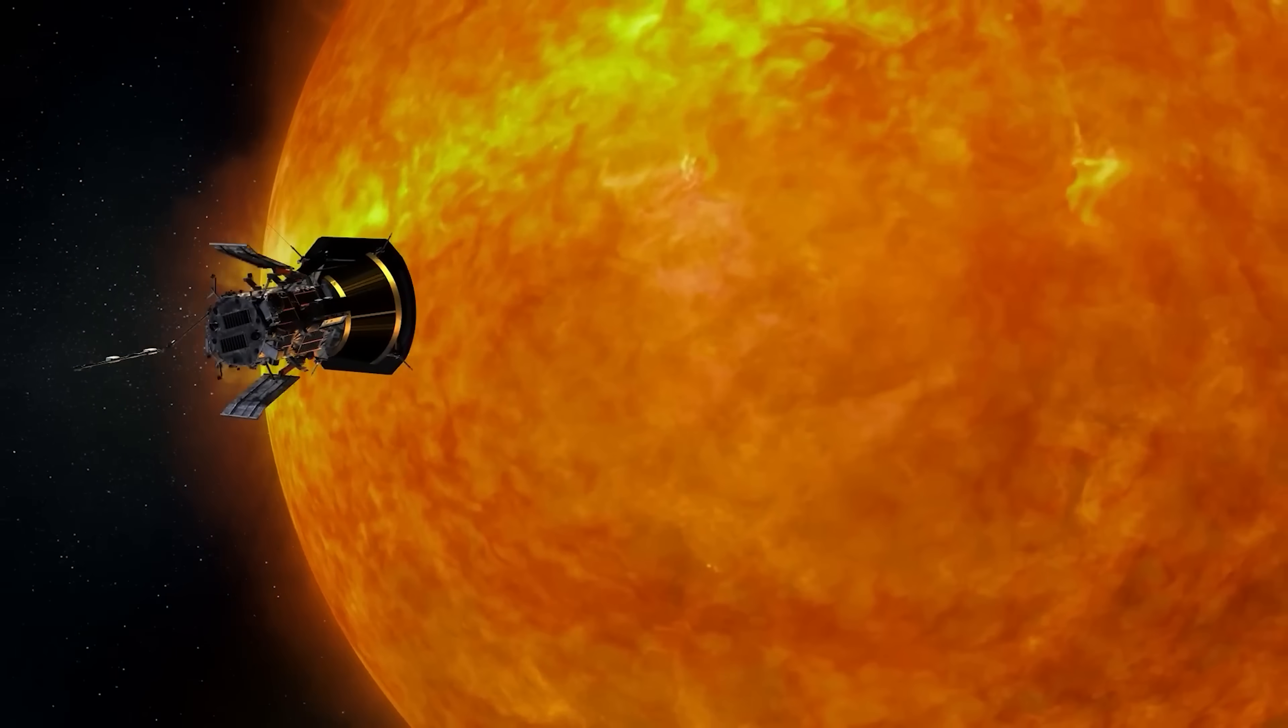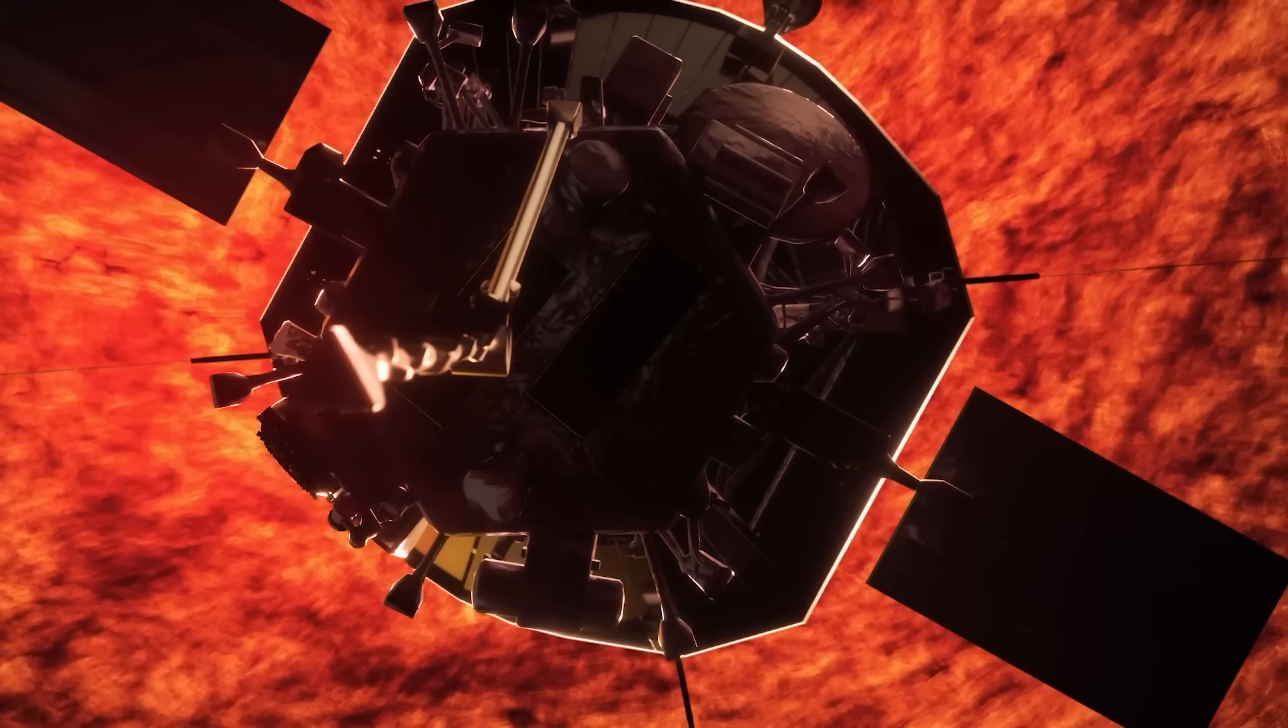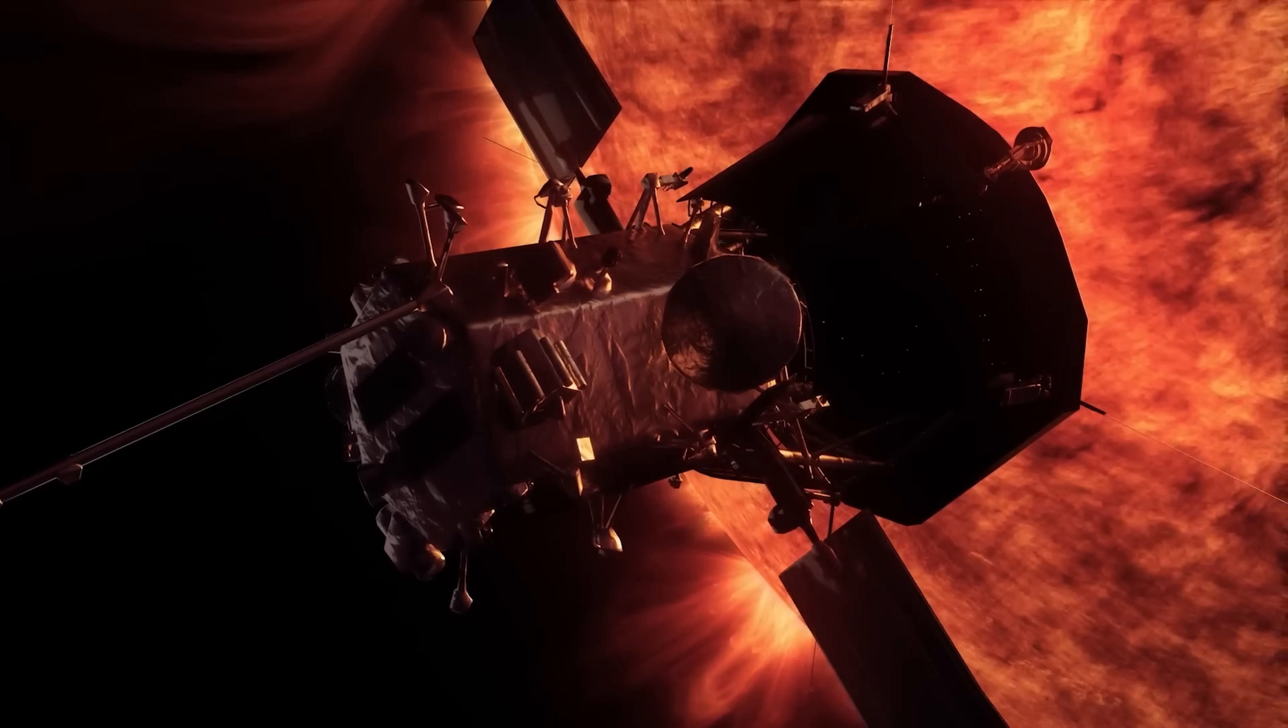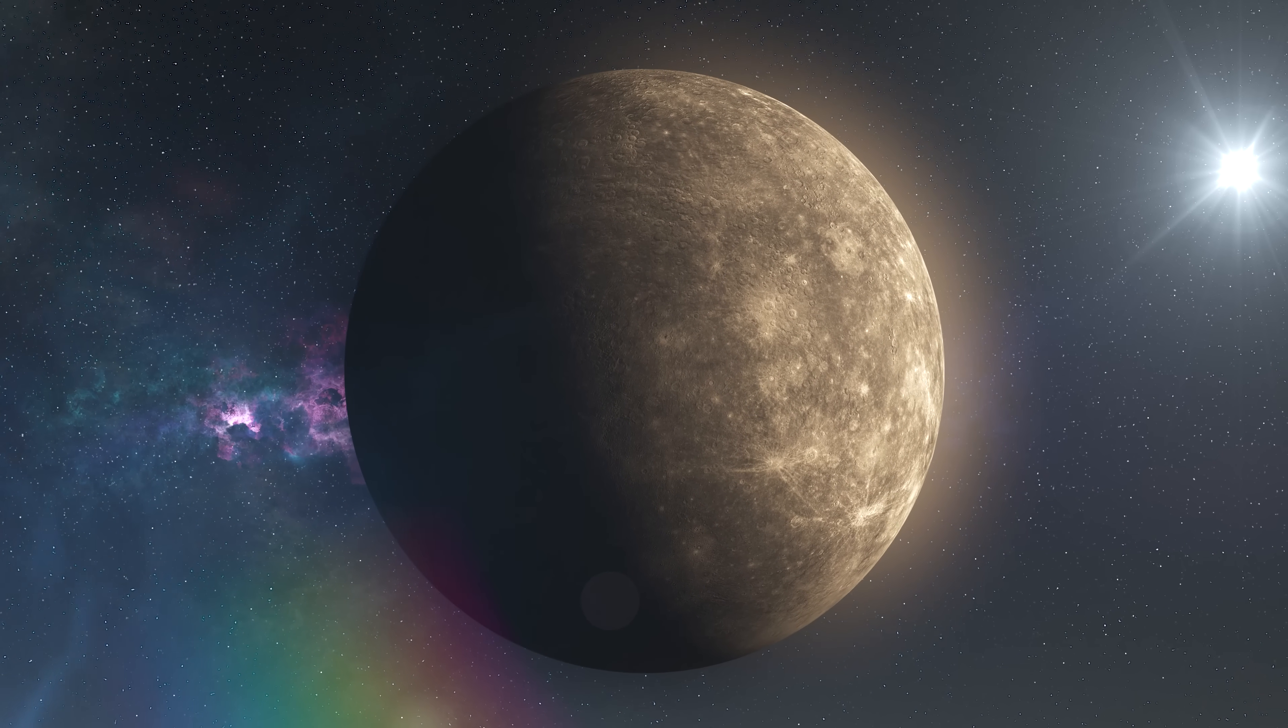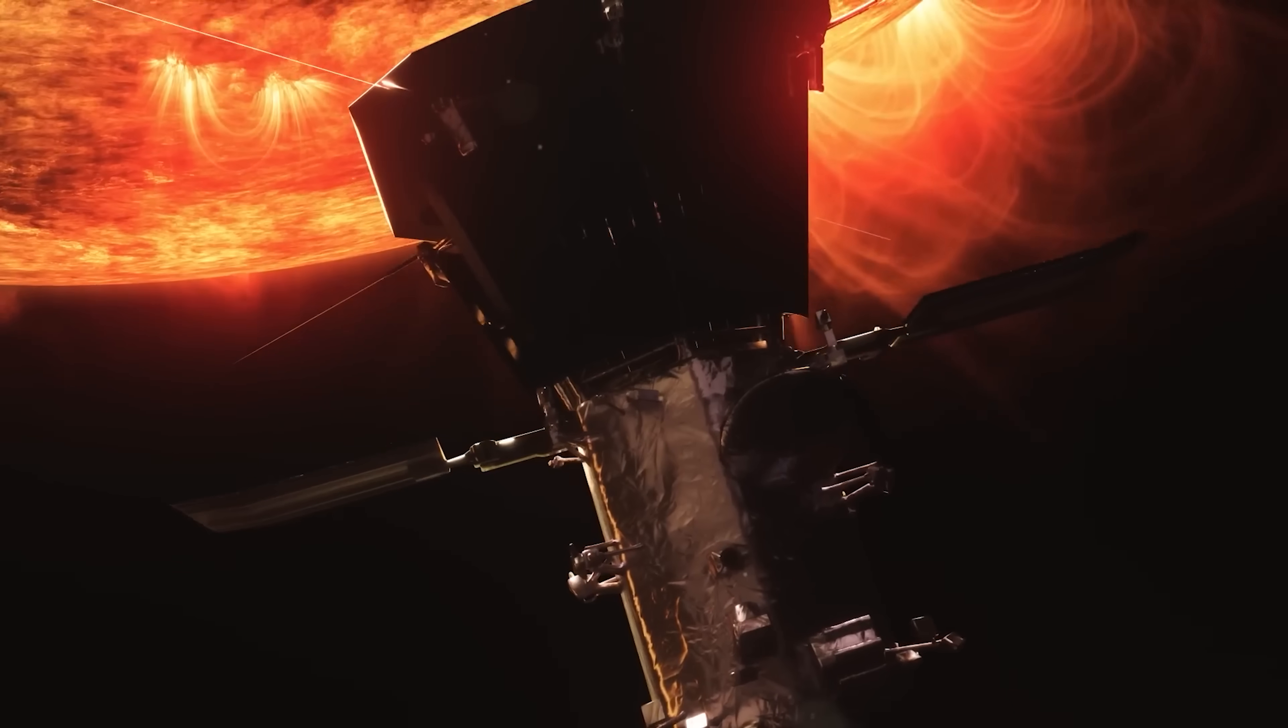And here's the crazy part. As of its closest flyby in 2021, Parker got within 5.3 million miles of the Sun's surface. That's deep inside the corona. For comparison, Mercury, the closest planet to the Sun, is 36 million miles away.